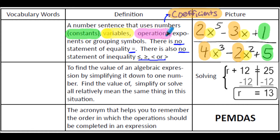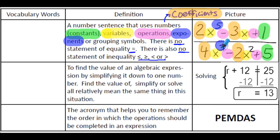The constants are the numbers that are alone or not with the variable term. We have operations, which are the plus or minus signs that we see here. And the exponents are the numbers that are written in the upper right-hand corner of your variable. Now the exponent on a variable that doesn't really have one is just understood to be 1. And then we have grouping symbols. The most common grouping symbols that you'll see this year are parentheses.